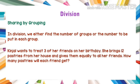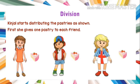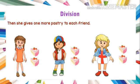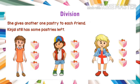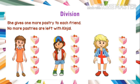Kinjal wants to treat three of her friends on her birthday. She brings twelve pastries from her house and gives them equally to all her friends. How many pastries will each friend get? Kinjal starts distributing the pastries: first she gives one pastry to each friend, then one more, then another one.